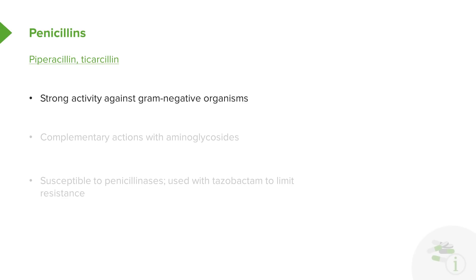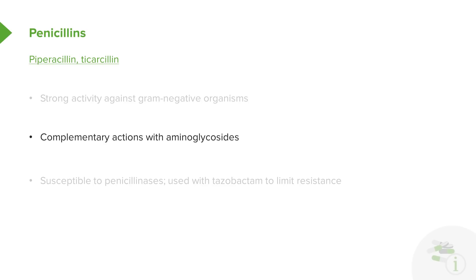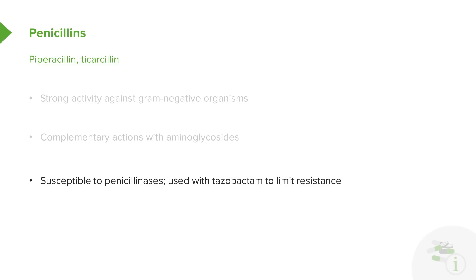Piperacillin and ticarcillin are stronger agents with very strong activity against gram-negative organisms. They are very complementary with aminoglycosides — piperacillin, for example, will be combined with tobramycin to give a very strong gram-negative treatment. Once again, these drugs are susceptible to the penicillinases, so we often combine drugs like piperacillin with tazobactam to limit the resistance.